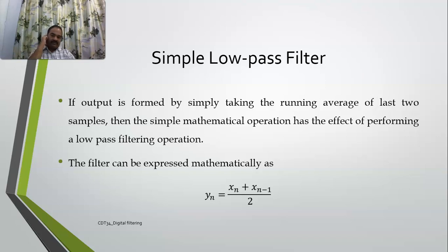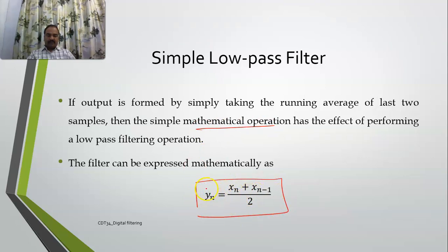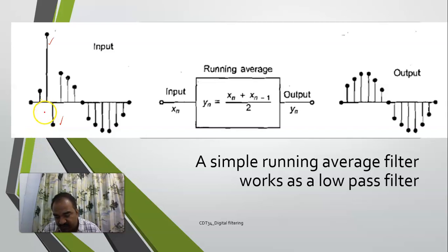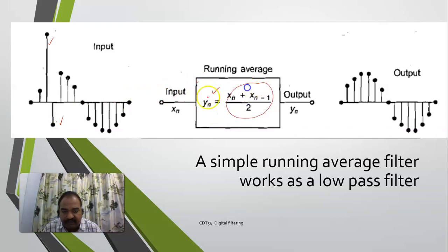For a low-pass filter, you eliminate higher-order harmonics and allow only low frequencies to pass. With digital sampled data, a simple mathematical operation can do this. If xn and xn-1 are your samples, a simple low-pass filter equation is: yn = (xn + xn-1) / 2. This takes the running average of the present and previous sample. I will show you how this eliminates high-frequency components from the input signal.